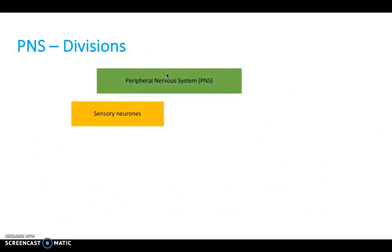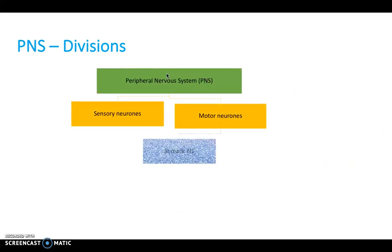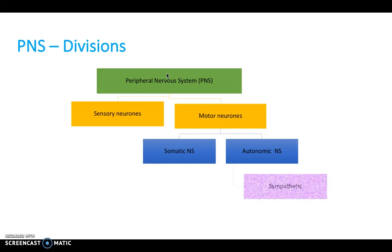The peripheral nervous system has sensory and motor aspects. The motor aspects can be divided into somatic and autonomic, and the autonomic can be further subdivided into sympathetic and parasympathetic.